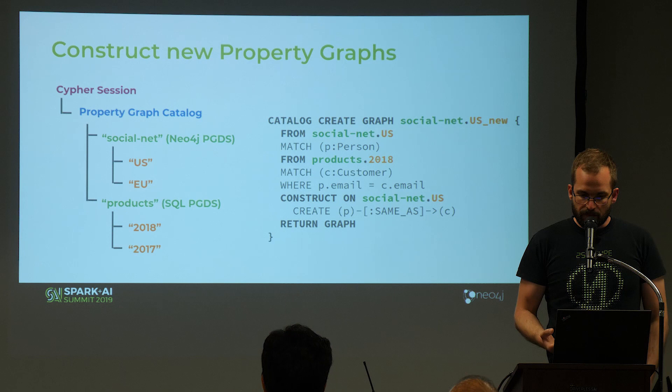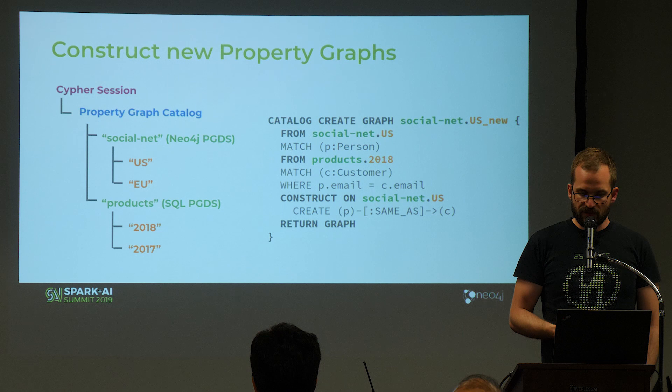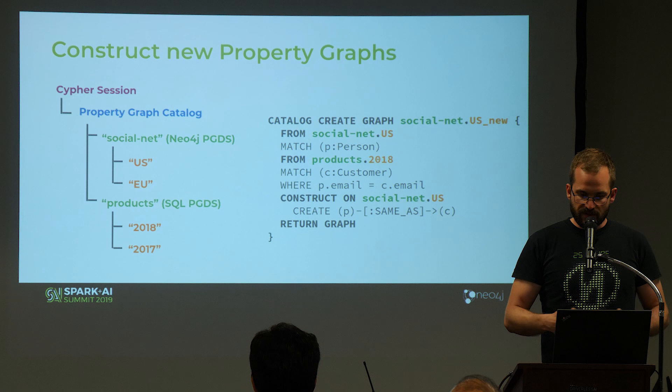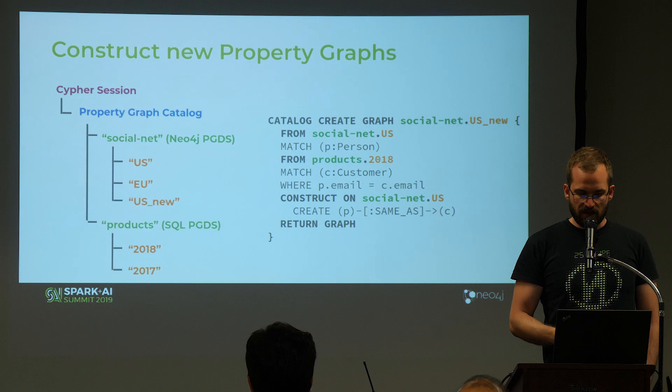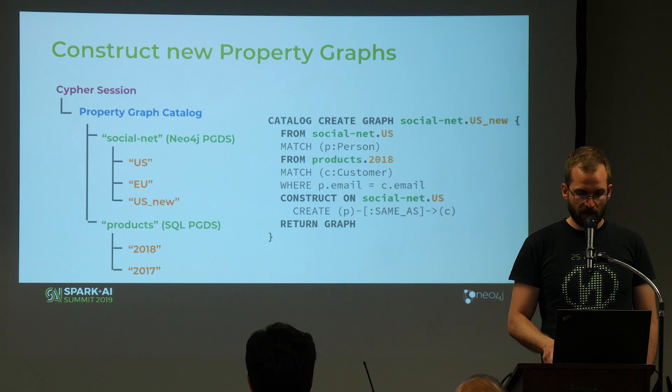For example, here we actually create a new graph. There's a Cypher syntax for that: 'CATALOG CREATE GRAPH socialnet.usnew', which stores the new graph in Neo4j under namespace 'socialnet' with graph name 'usnew'. This is the joint graph between the social network and the products graph, creating a new relationship between customers and persons who have the same email address — called 'same as' — and this graph is stored in Neo4j and can be accessed in another query.